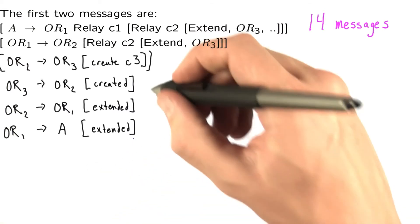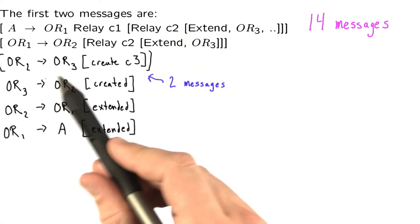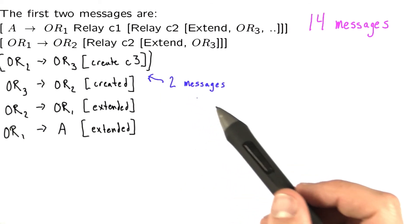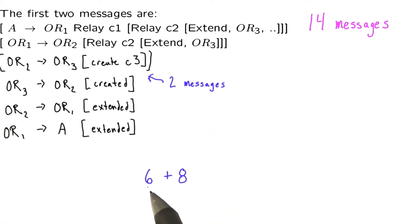To then extend onto OnionRouter4, there will be two new messages in between OnionRouter3 and OnionRouter4. So it takes six messages to extend to OnionRouter3, and then eight more messages to extend to OnionRouter4 to get 14.